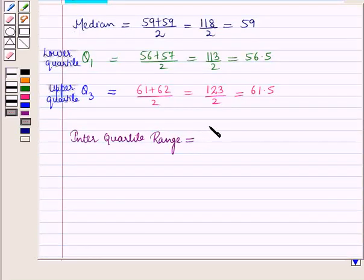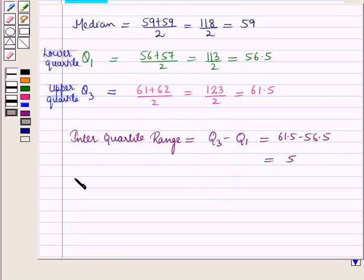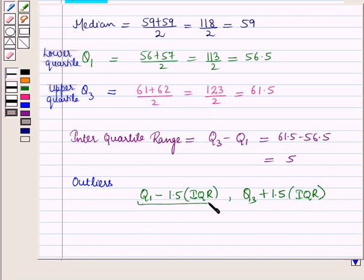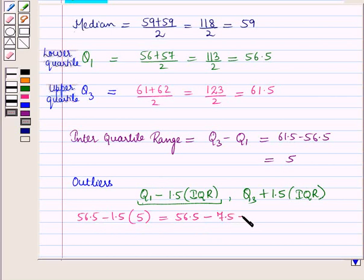The interquartile range equals upper quartile minus lower quartile, which is 61.5 − 56.5 = 5. Now we check for outliers. The lower boundary is Q1 − 1.5 × IQR = 56.5 − 7.5 = 49, and the upper boundary is Q3 + 1.5 × IQR = 61.5 + 7.5 = 69.